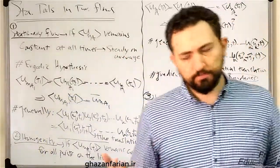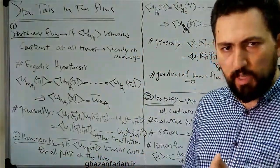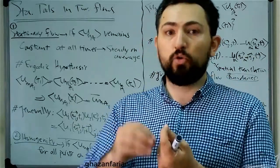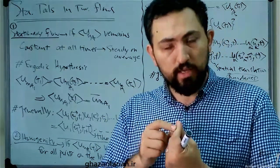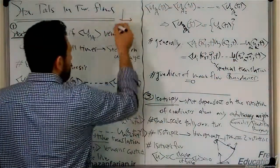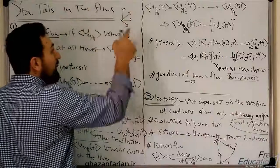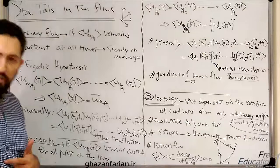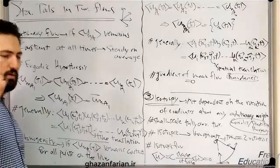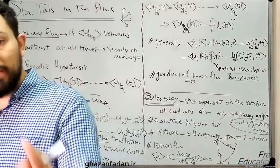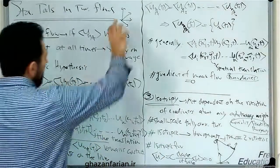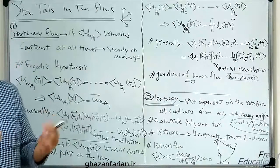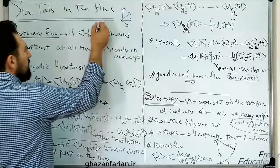Consider we have a turbulent flow and there is a coordinate at this point. You can rotate the coordinate without translation, or you can rotate the coordinate about its origin. For example, this is our coordinate. If I rotate this coordinate about its origin, this is the second rotated coordinate. So the different properties of a turbulent flow should remain constant by the rotation of the coordinate.